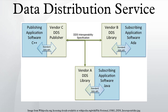Architecture entities: Domain Participant Factory is a singleton factory and the main entry point to DDS. Domain Participant is the entry point for communication in a specific domain; it represents the participation of an application in one DDS domain. Furthermore, it acts as a factory for DDS publishers, subscribers, topics, multi-topics, and content-filtered topics.